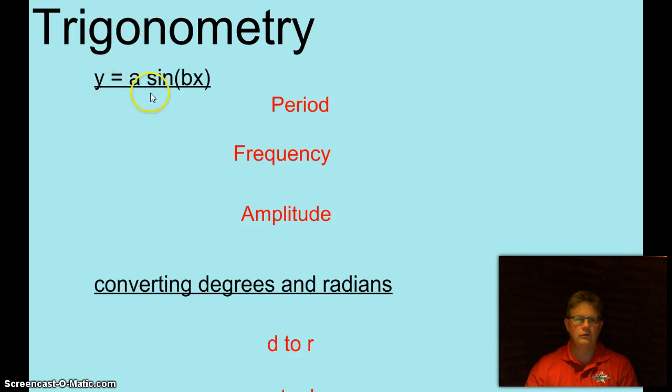Alright, we'll start out with y equals a sine bx. Do you remember what the period was? The period was 2π over the absolute value of b. How about the frequency? That would be b. And the amplitude, yes of course that was a.